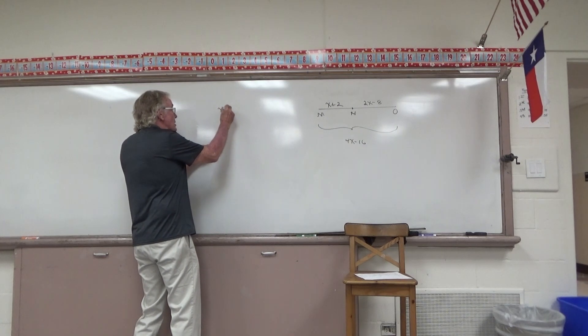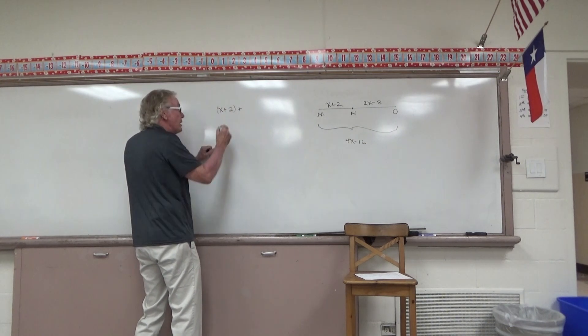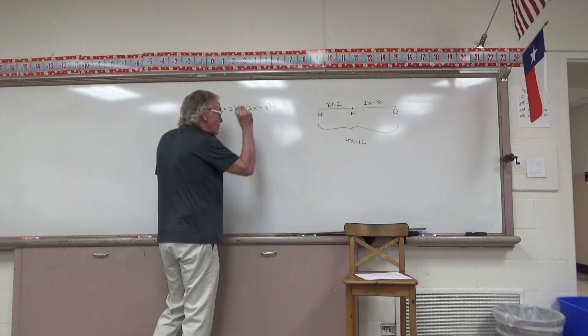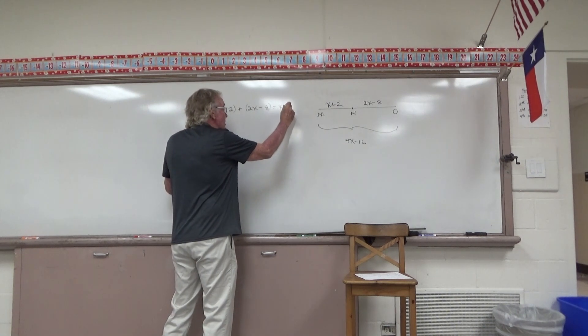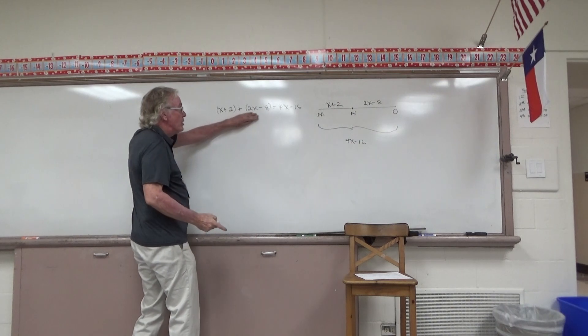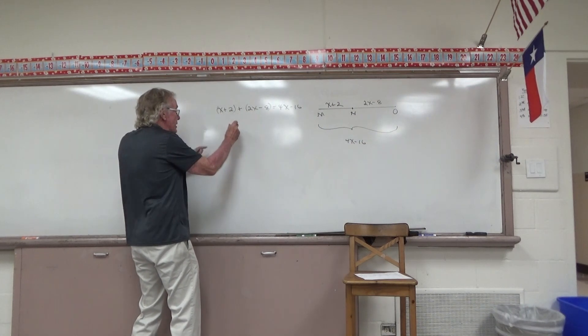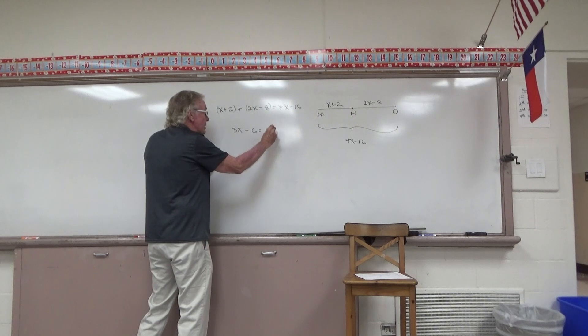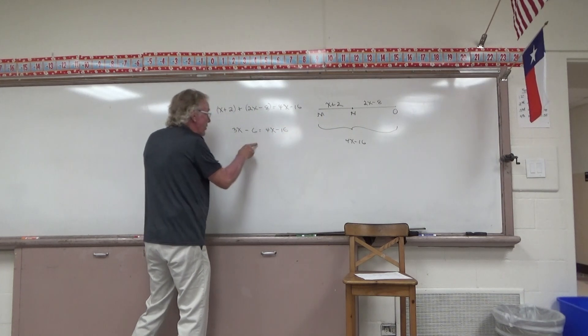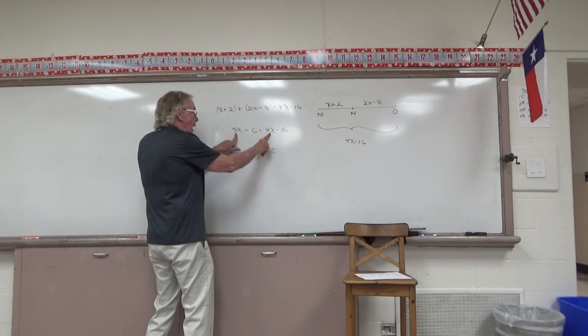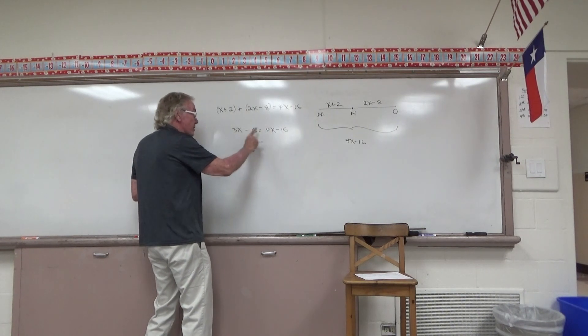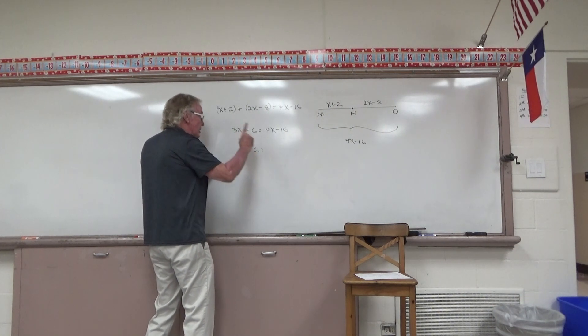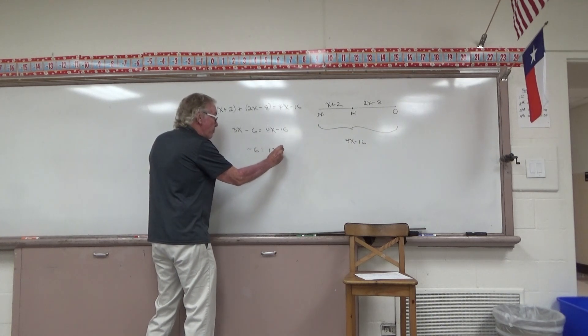So X plus 2 plus 2X minus 8 adds up to 4X minus 16. Gather like terms on the left-hand member, giving me 3X. Positive 2 and a negative 8 is minus 6 equals 4X minus 16. As we think what will happen next, I can't put these together. I should subtract the smaller, the 3X from both sides. When I subtract 3X from both sides, on the left-hand member I'm left with negative 6. Subtract 3X from 4X, I'm left with 1X minus 16.